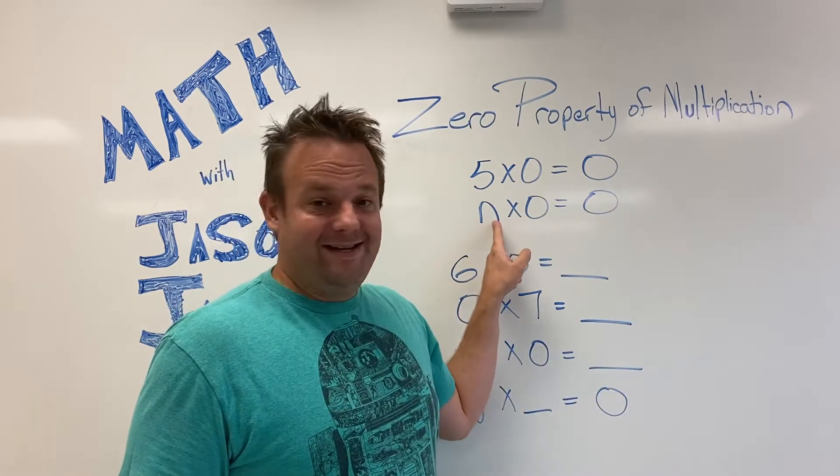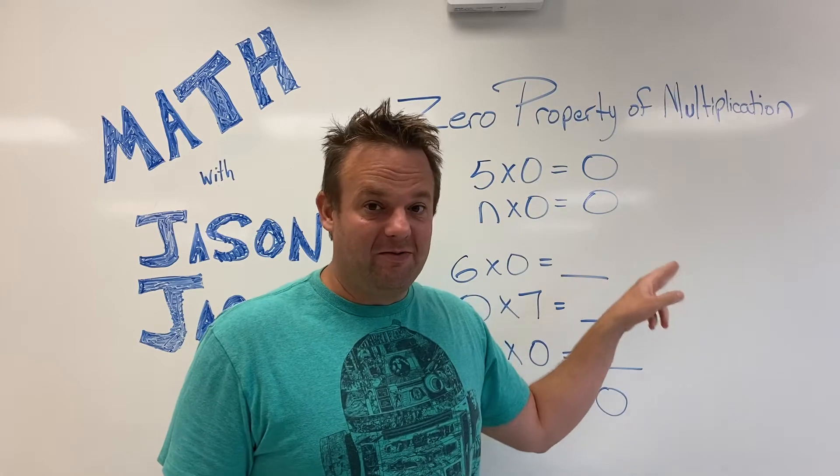So any number, let's say n, times zero is zero. It's just that simple.